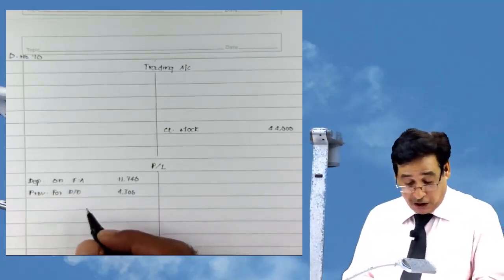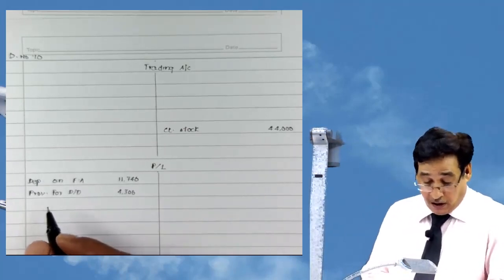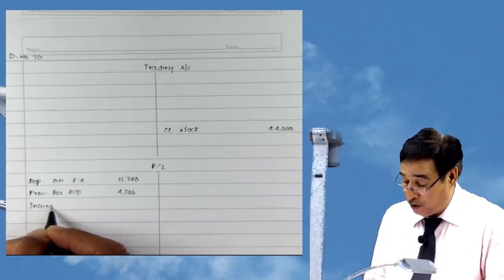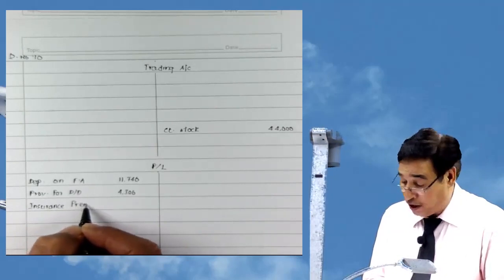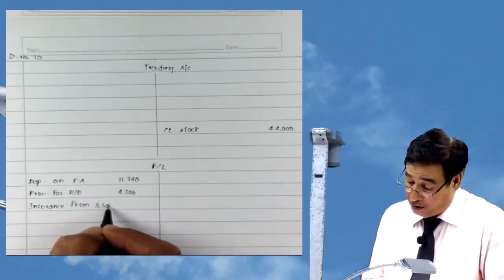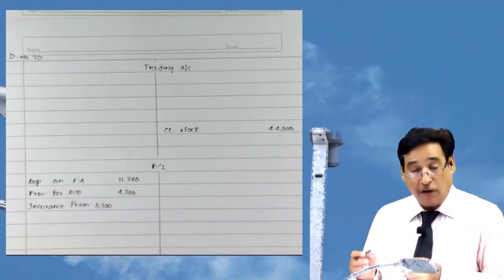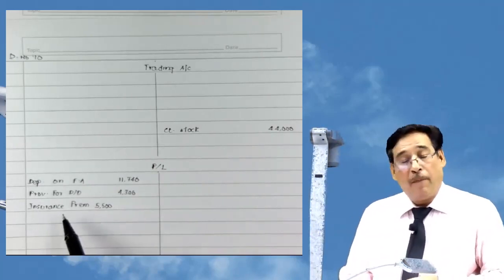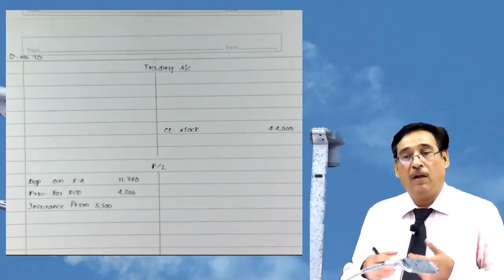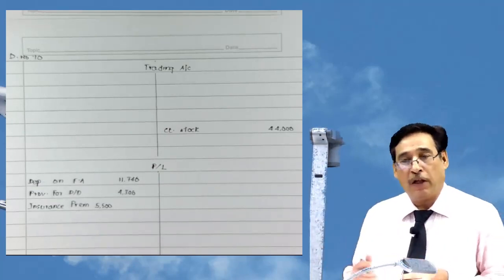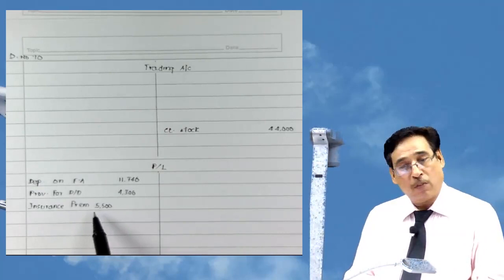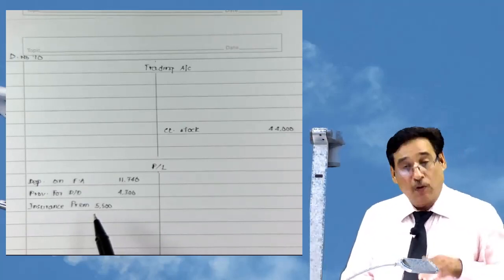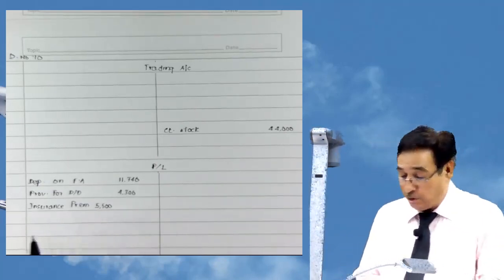Now information related to insurance premium: in the trial balance, insurance premium is 5,500. The question states that insurance premium includes 4,000 paid towards the proprietor's life insurance policy. Suppose the proprietor of the business has taken a policy for themselves — the premium paid by the business enterprise includes 4,000 related to that proprietor's policy, so it is a personal expense and will be considered as drawings.